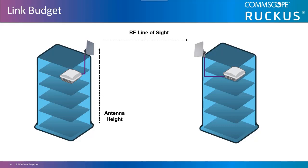Fresnel zones are beyond the scope of this class, but they represent the 3D space between the two devices, of which at least 60 percent of the zone should be free from any obstructions. If you do not have at least 60 percent free, then the link is deemed possibly unusable.